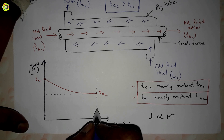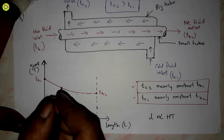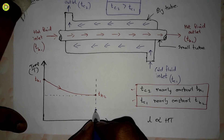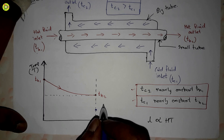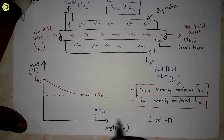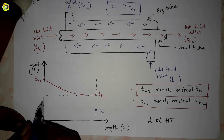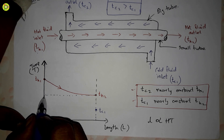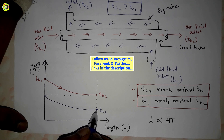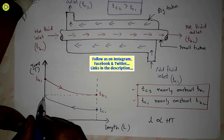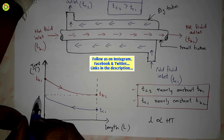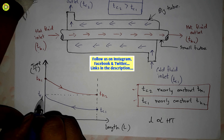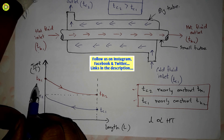Since this is a counter flow heat exchanger, the cold fluid flows in the opposite direction. The cold fluid starts at its lowest temperature tc1, and as it passes in the opposite direction its temperature rises. At the outlet of the cold fluid, the temperature reaches tc2, which is nearly equal to th1 in ideal conditions.